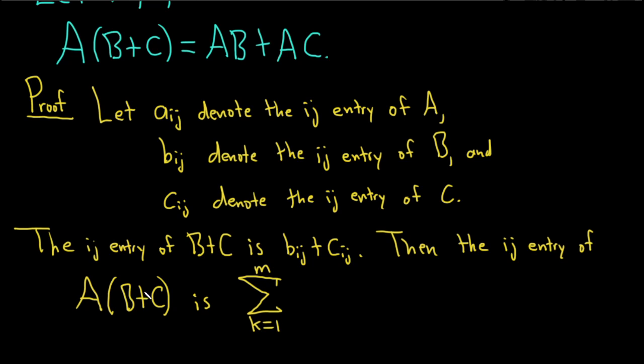And it's going to be the i-th row of A, which we'll denote by aik. Note that k is running from 1 to m, so it'll pick up every element in that row. And then here we need the j-th column of B plus C. So that's going to be bkj plus ckj.